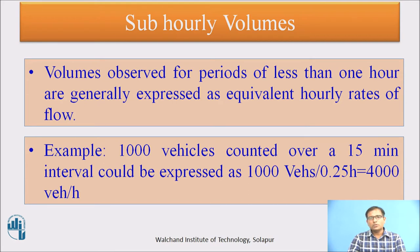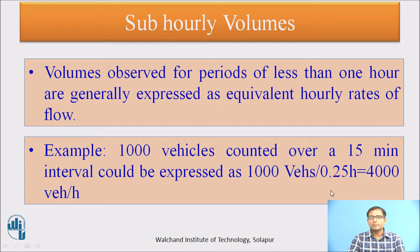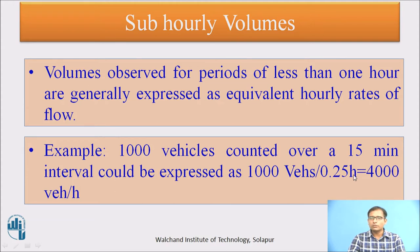Volumes observed for a period of less than one hour are generally expressed as equivalent hourly rates of flow. For example, if 1000 vehicles are counted in 15 minutes, the equivalent hourly rate of flow is calculated by dividing by 0.25, because in one hour there are four 15-minute periods. So 1000 divided by 0.25 gives 4000 vehicles per hour — the 15-minute volume converted to an equivalent hourly rate of flow.